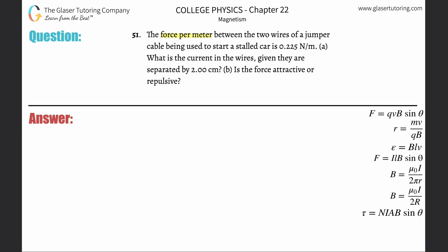The force per meter between the two wires of a jumper cable being used to start a stalled car is 0.225 newtons per meter. What is the current in the wires given they are separated by two centimeters? So basically what we have to do here is we have to be able to find the current. They're giving us force per meter and all this stuff, so we might have to do a couple of substitutions.